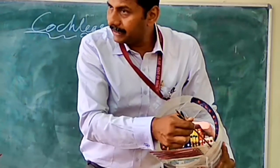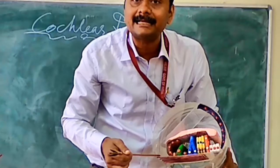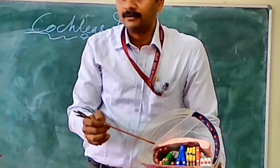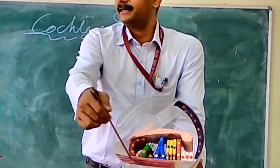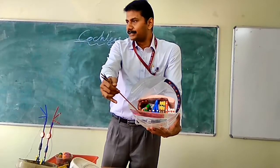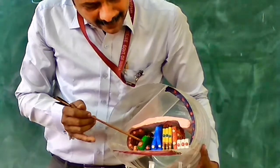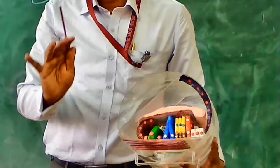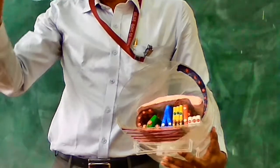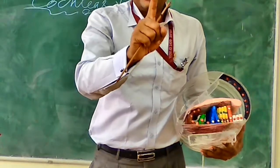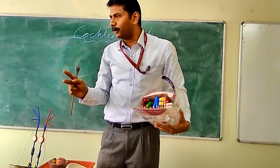This is the basilar membrane. The basilar membrane houses a set of organelles known as the organ of Corti. We will understand exactly what is in the organ of Corti. The organ of Corti has some hair cells. The hair cells are of two types primarily: cells directly concerned with hearing, and cells which are supporting in nature.